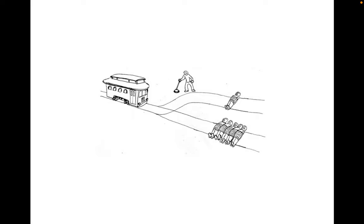There's been a lot of data collected on the trolley scenario, and what most people say for this lever version is that you should pull the lever. The intuition here seems to be something like: if you're in a dilemma situation where people are going to die, try to do the least amount of harm you can. That seems to be the ethical principle at work — do the least amount of harm.